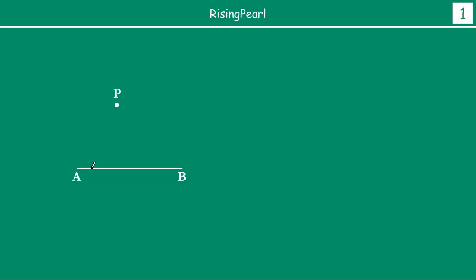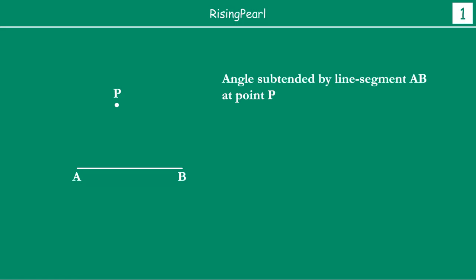Eek kaam karte hai, Dostho, let us take a Line Segment AB as shown here, and Dostho, let us take a point P — aisi a point joh line ke uper nahin lie karte hai, that is, this point is away from the line. Now, Dostho, hum aap se eek simple sa question poochta hai: what is the Angle Subtended by Line Segment AB at point P?